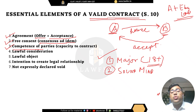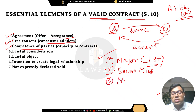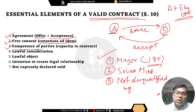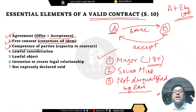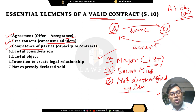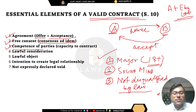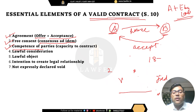The third requirement for competence is that law should not have disqualified you from entering into a contract. If you fulfill all three — being a major, being of sound mind, and not being disqualified by law — then you are competent to enter into a contract.